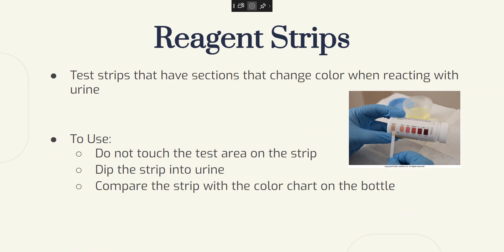A reagent strip is a test strip that has sections that change color when reacting with urine. To use it, it's important not to touch the test area on the strip. Dip the strip into urine and compare the strip with the color chart on the bottle. In some states and agencies, testing urine with reagent strips is a routine nursing task.